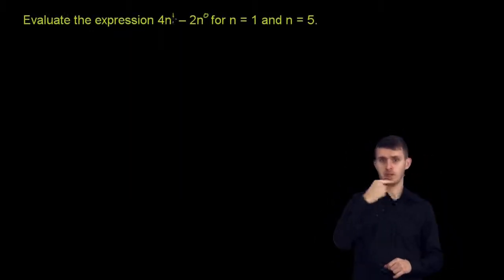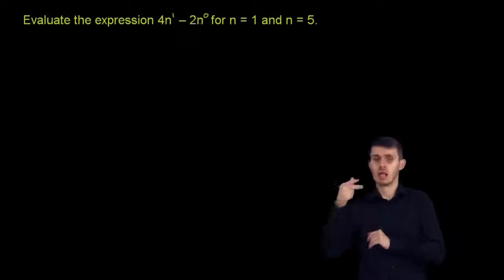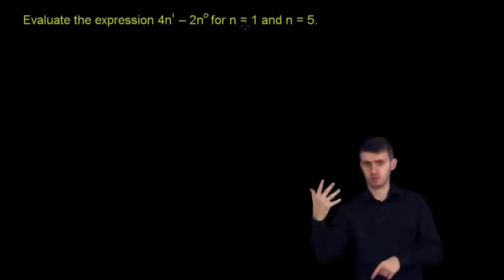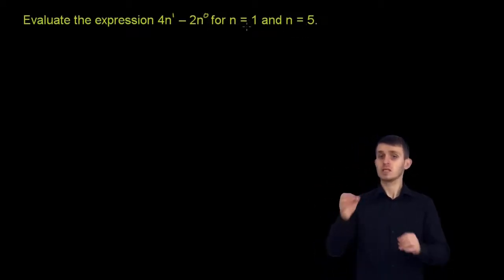Evaluate the expression 4n to the first power minus 2n to the zeroth power for n equals 1 and n equals 5.